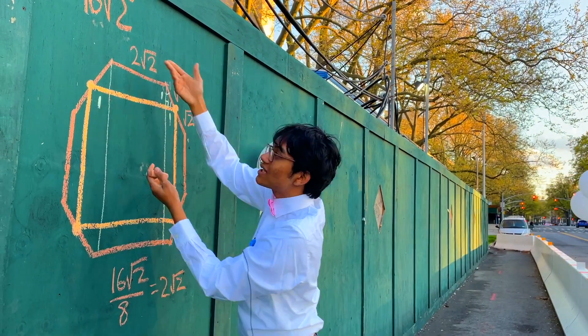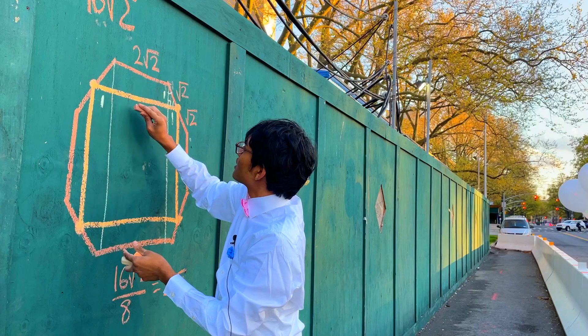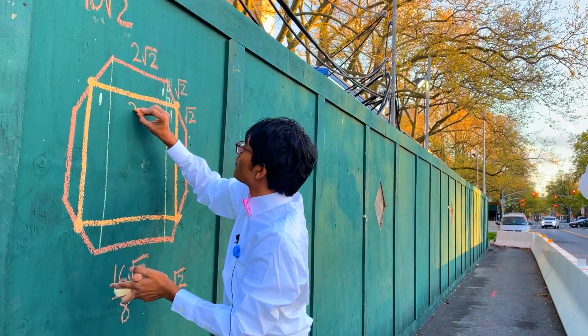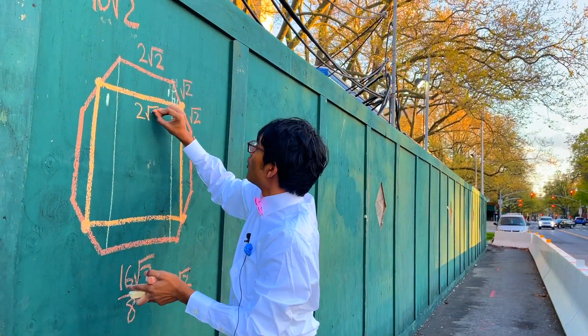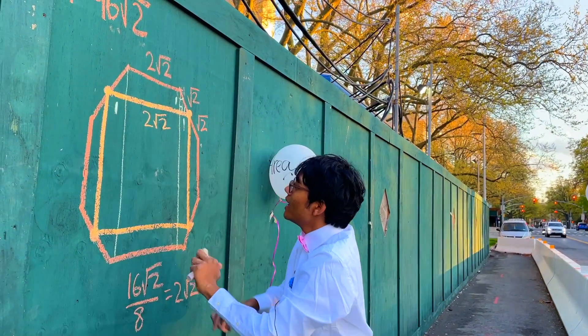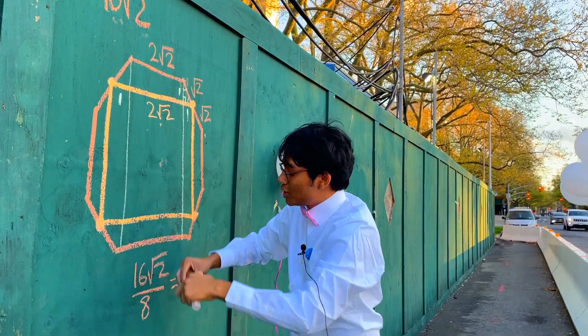So what's the length of that segment of the square? It's going to be 2 root 2 — you just drop down the side length of the octagon.